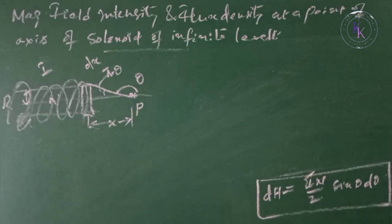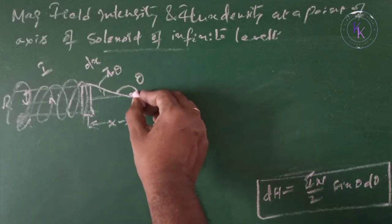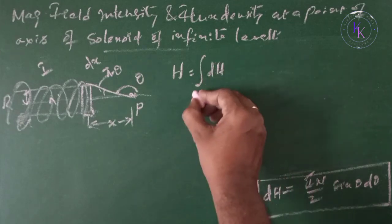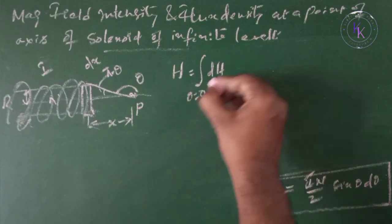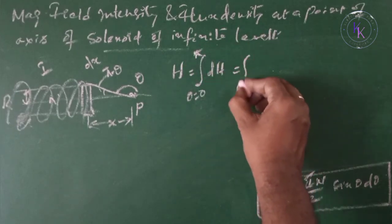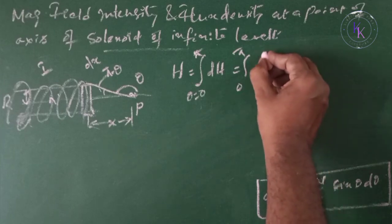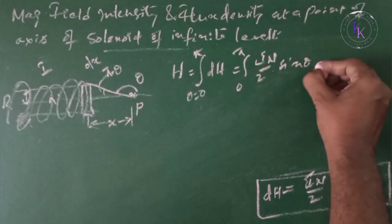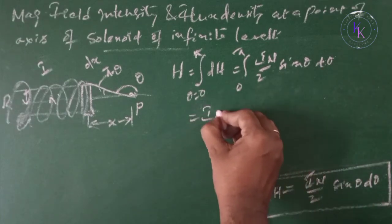Since the solenoid is infinite length, the field intensity at point P is obtained by integrating this between theta equal to 0 to pi. So theta can vary from 0 to 180 degrees, which equals to integral 0 to pi of I N by 2 sin theta d theta.